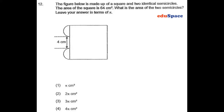The question shows a square and two identical semicircles. The area of the square is 64, so we will square root 64, which equals 8, meaning each side of the square is 8.